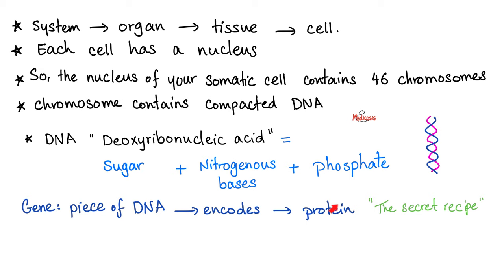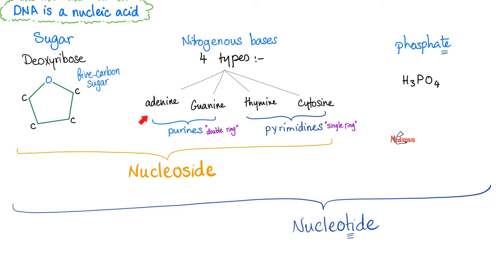Open any biochemistry textbook — what do you see? Lots of enzymes! All of them are coded by DNA, specifically a piece of DNA known as the gene. Also recall that this DNA is arranged in 46 chromosomes inside your nucleus. The components are: sugar backbone, which is deoxyribose sugar; nitrogenous bases, which could be any one of four; and phosphate.